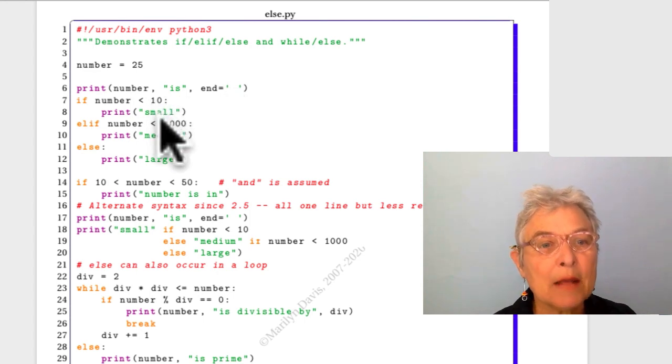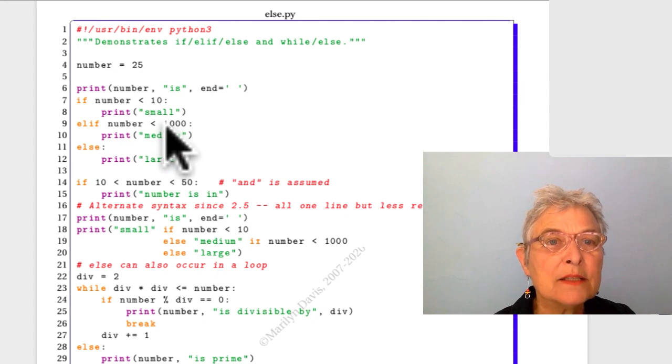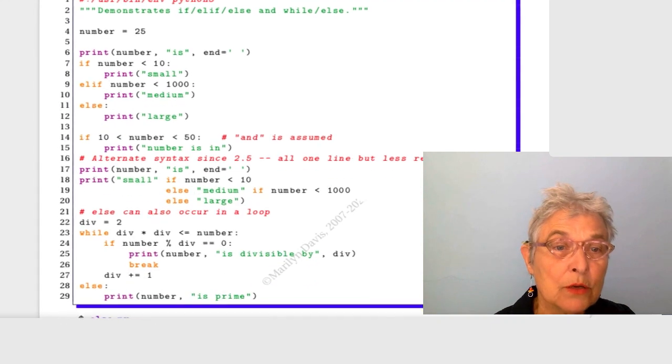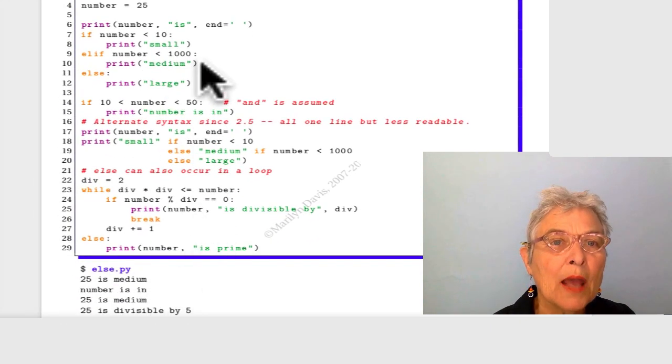If it's less than 10, I'll be saying small. But it isn't. It's 25, which is also less than 1000. So I say medium. Here it is, 25 is medium. And these prints don't have an end equals. Therefore, the new line happens.